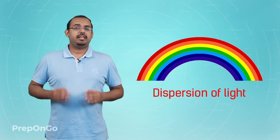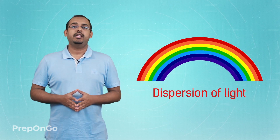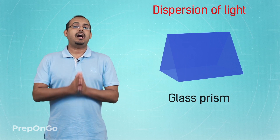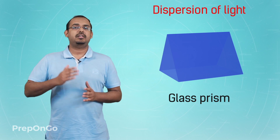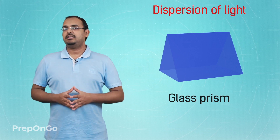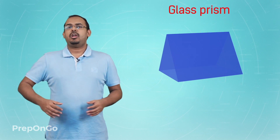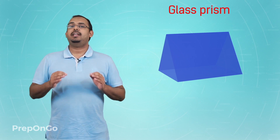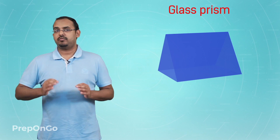So in this particular lecture, we will study about the phenomenon of dispersion of light with the help of a glass prism. And after we have seen how dispersion of light occurs with a glass prism, we will try and understand how these rainbows are formed. So to start with, let us first try and understand how a glass prism looks like and understand the shape of this glass prism.